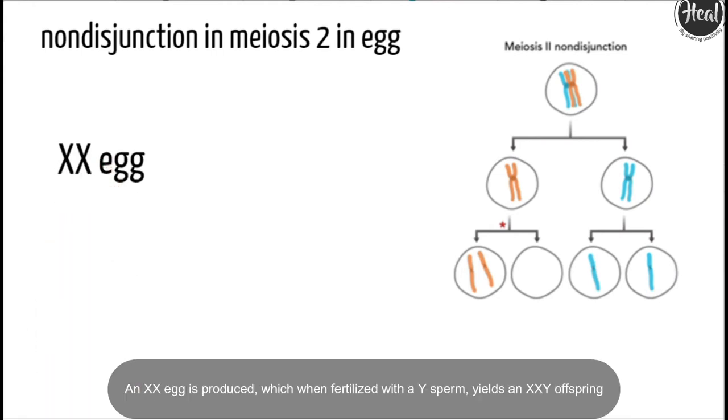An XX egg is produced, which when fertilized with a Y sperm, yields an XXY offspring.